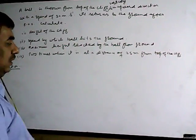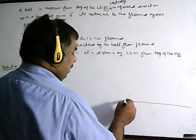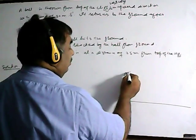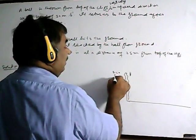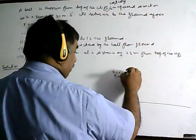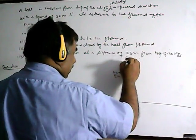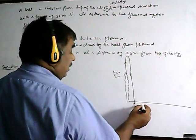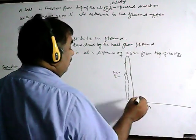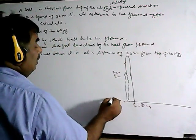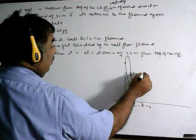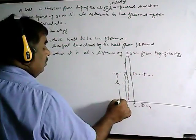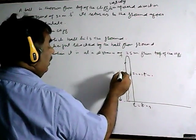Let us see what is happening. This is the ground and this is the cliff — this is the top of the cliff. The ball is thrown from here, so I will take s as zero when t is equal to zero. The ball goes up, reaches the highest point, then comes down and hits the ground after 8.0 seconds. The height of the cliff is h.